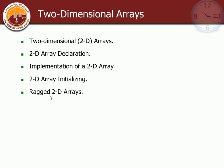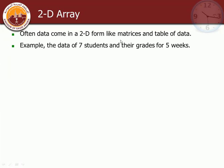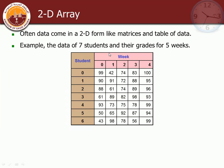Two-dimensional arrays are like a matrix or table. For example, we have seven students with grades for five weeks. We could use one-dimensional arrays, but then we'd need to declare six or seven separate arrays — student one with five elements, student two, and so on. If you have 100 students, that requires a lot of declarations. Instead, we can declare one two-dimensional array and specify the number of rows and columns.